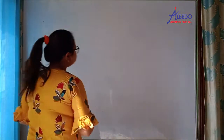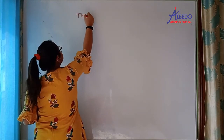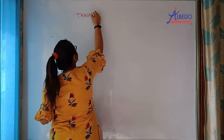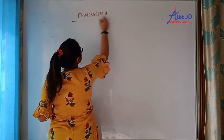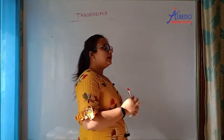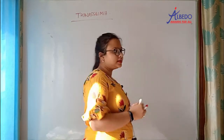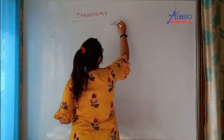In the last video, I told you about sickle cell anemia. Let us start with the next recessive disorder, that is thalassemia. Thalassemia is a blood-related disorder, just like sickle cell anemia.